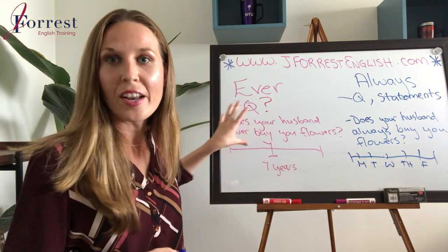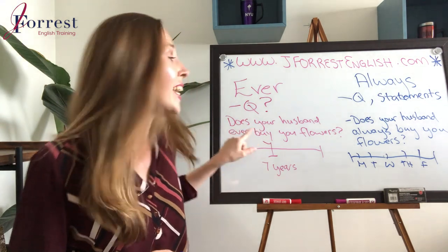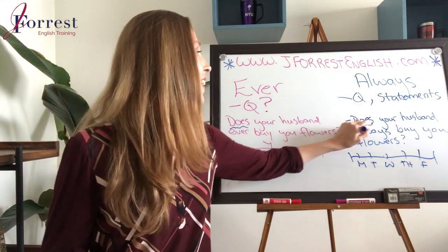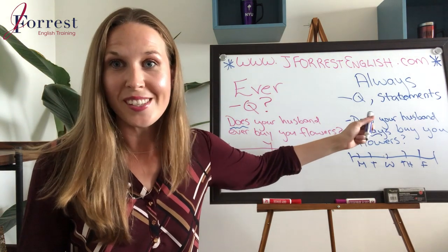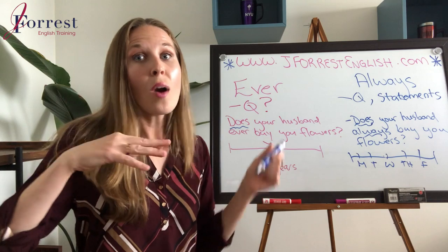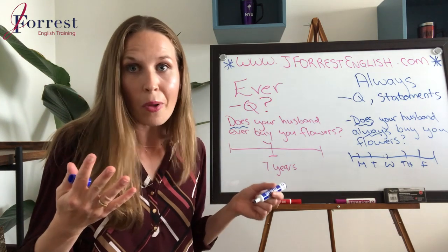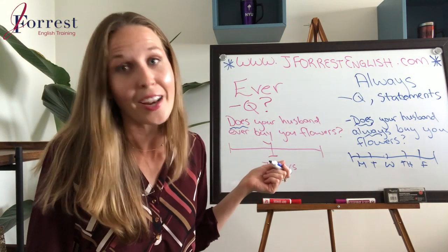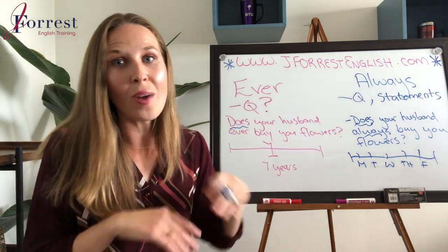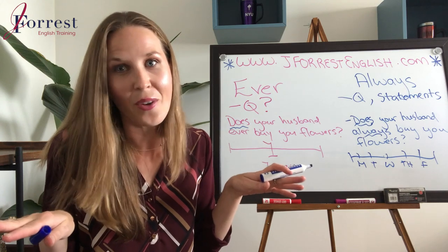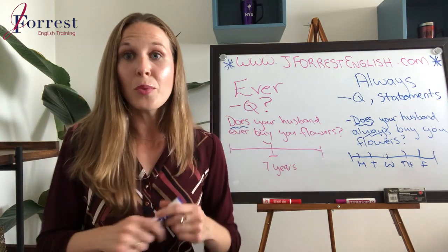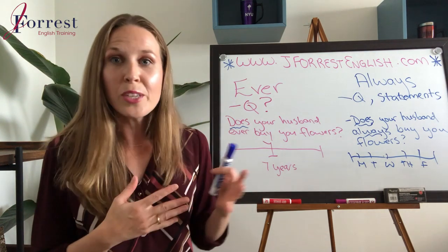To answer the question do you ever get up at six, because we're talking about frequency in the present simple — and always and ever are time references for the present simple — you would use an adverb of frequency. You could say: sometimes I get up at six, or I frequently get up at six, or I never get up at six — never being the opposite of always. So you would most likely answer using an adverb of frequency. I really love this question because we got to talk about present simple adverbs of frequency.